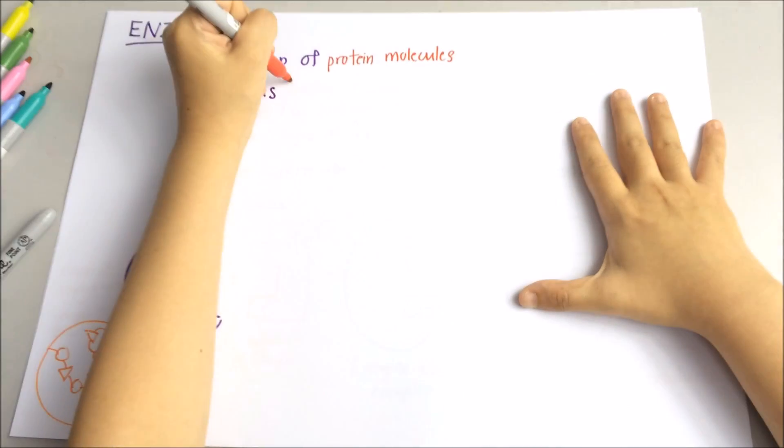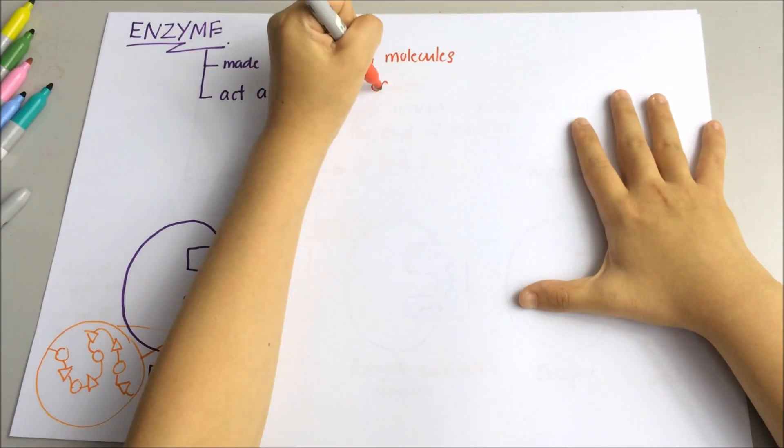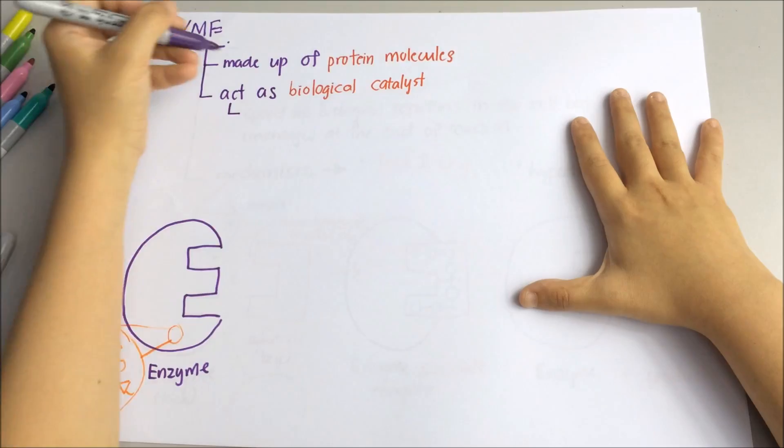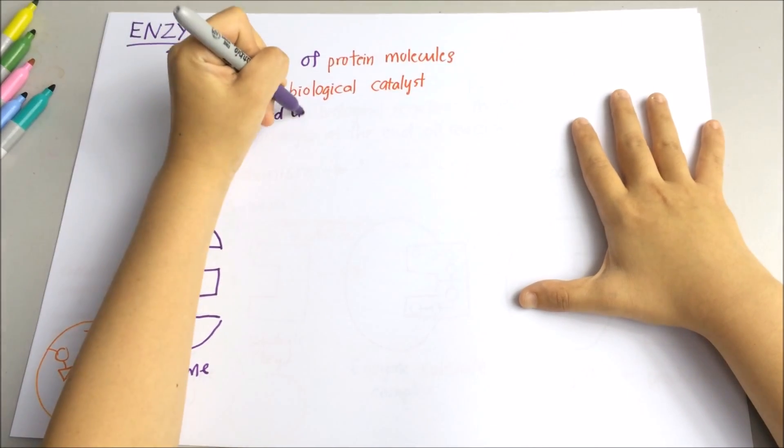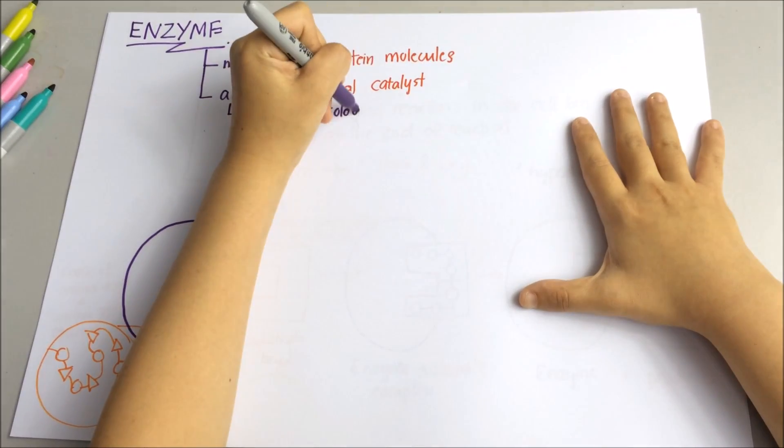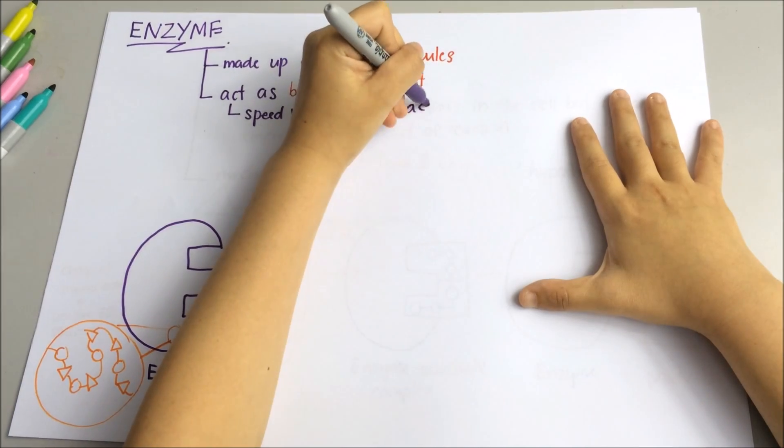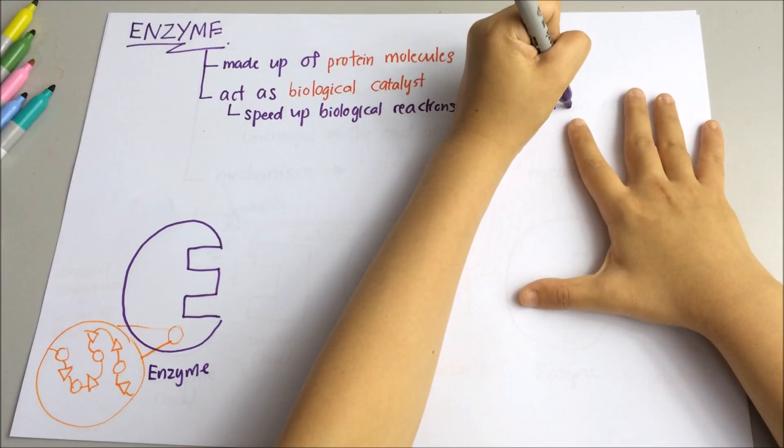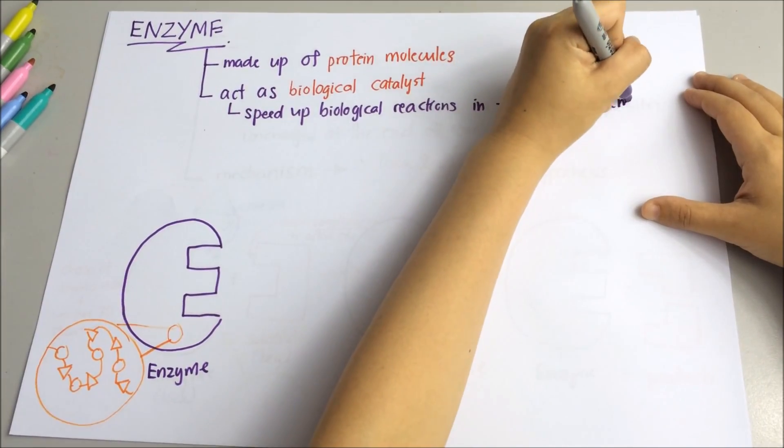In the exam, if they ask you what is the function of enzymes, this is how you write it: enzymes act as biological catalysts. It means that they function to speed up biological reactions in the cell but remain unchanged at the end of the reaction.